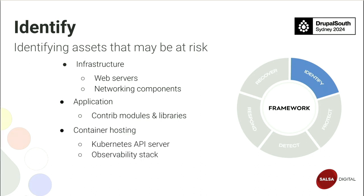For container hosting, particularly exposed components include the Kubernetes API server, observability stack components like Grafana or OpenSearch dashboards, and other cluster management APIs. For example, the Lagoon API for clusters managed by Amazee's Lagoon.sh is also publicly exposed. For people, personnel are often the weakest link given the sophistication of phishing and spear phishing attacks. And for process, outdated processes are a risk that could negatively impact implementation of later framework stages.